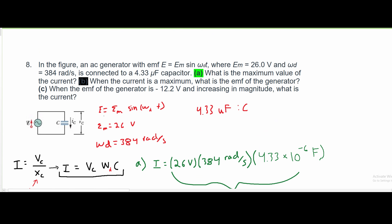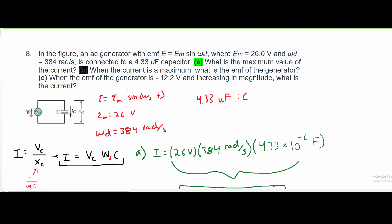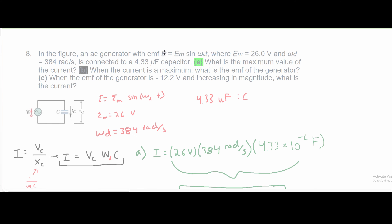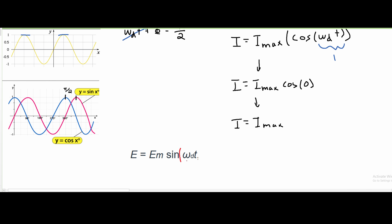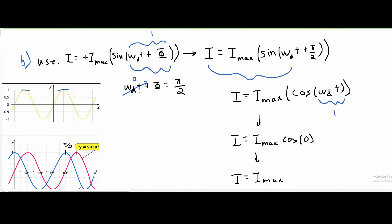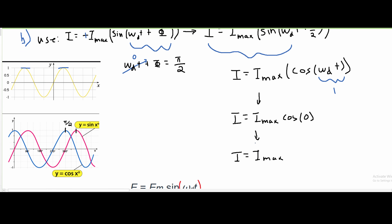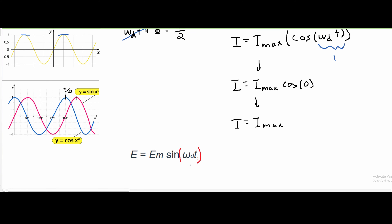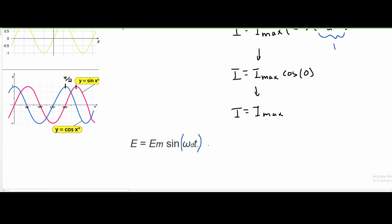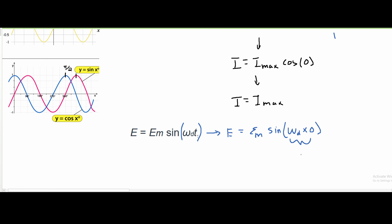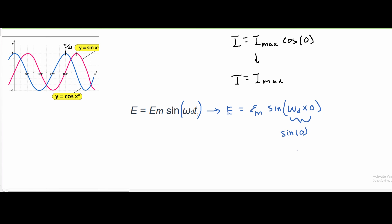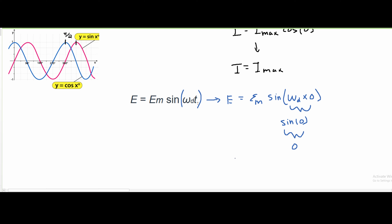So basically, our question was asking: when the current is at maximum, what is the EMF of the generator? To find the EMF, we need to use the formula we were given. We said T equals 0, and solving this out we basically proved T equals 0. So in the given formula, we plug in T equals 0, and we rewrite it as E equals the alternating EMF times sine of omega-D times 0. This is just sine of 0, and sine of 0 is just 0. So that means our E, when the current is at maximum, is equal to 0.